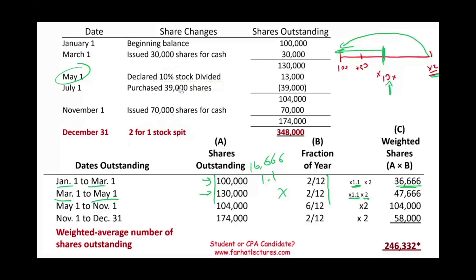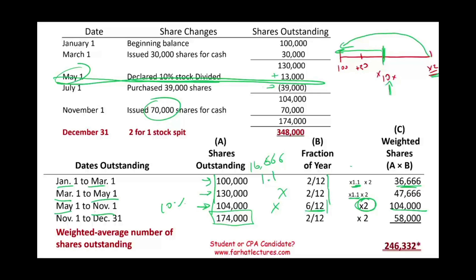After adding the 13,000 from the 10% stock dividend and deducting 39,000 shares, we had 104,000 shares from May till November — all of May, June, July, August, September, October — times 6/12. This amount is subject to the stock split — we double it. Notice the 104,000 shares are NOT subject to the 10% stock dividend, because the stock dividend took place before this period. Then from November 1st till December 31st, we had 174,000 shares because we issued an additional 70,000 — times 2/12, and this amount is also subject to doubling.